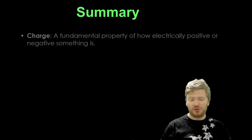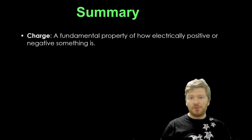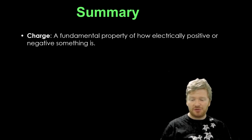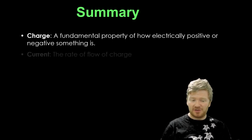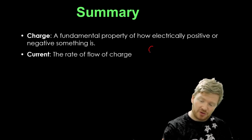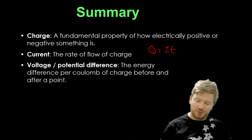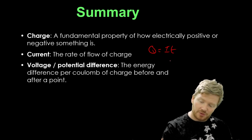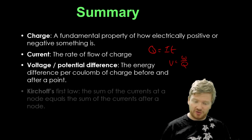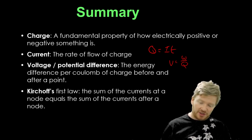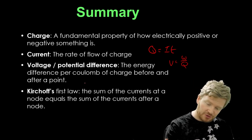All right, so a little summary of what you should know by now. We've talked about how charge is the fundamental property of how electrically positive or negative something is. We've talked about current, that is the rate of flow of charge, or Q is equal to IT. We've talked about voltage or potential difference, that is the energy difference per coulomb of charge before and after a point. So we can say that voltage is equal to work done divided by charge. Kirchhoff's first law says that the sum of the currents at a node equals the sum of the currents after a node.